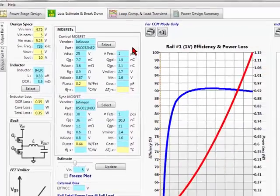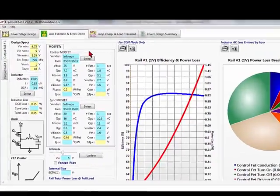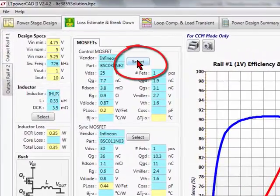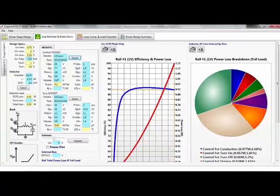To select another component in the loss estimator and breakdown window, press the select button for the component that you want to change. The library popup window allows the user to select components from a list of built-in parts. There's also the possibility to add user parts inside the libraries.